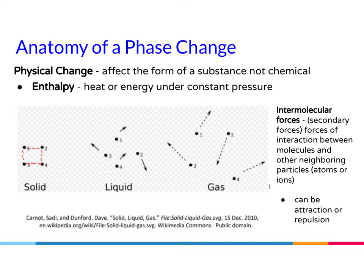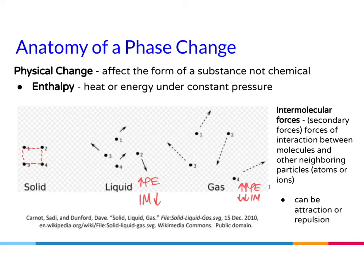The second state is a liquid. You've gained average kinetic energy, so there's more movement, though they still have a set volume — they take up the volume of their container. Their intermolecular particles are a little weaker because they have more average kinetic energy, and therefore their potential energy goes up. Then in a gas, the average kinetic energy has gotten much higher, so you have more potential energy and very weak intermolecular forces.